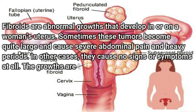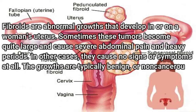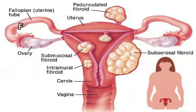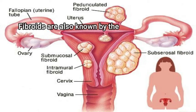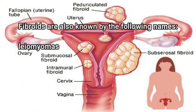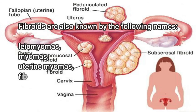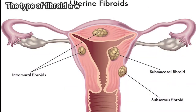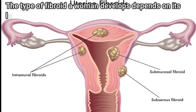The growths are typically benign, or non-cancerous. The cause of fibroids is unknown. Fibroids are also known by the following names: leiomyomas, myomas, uterine myomas, and fibromas. The type of fibroid a woman develops depends on its location in or on the uterus.